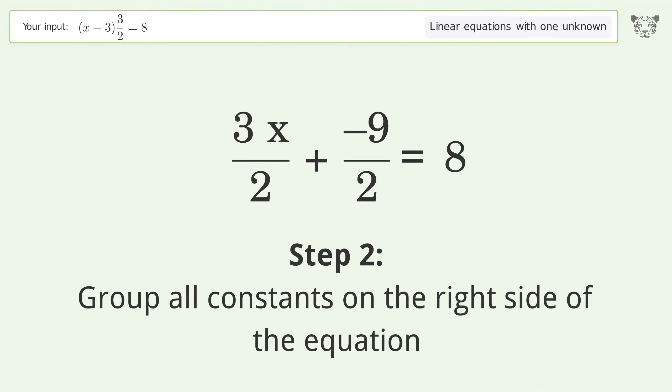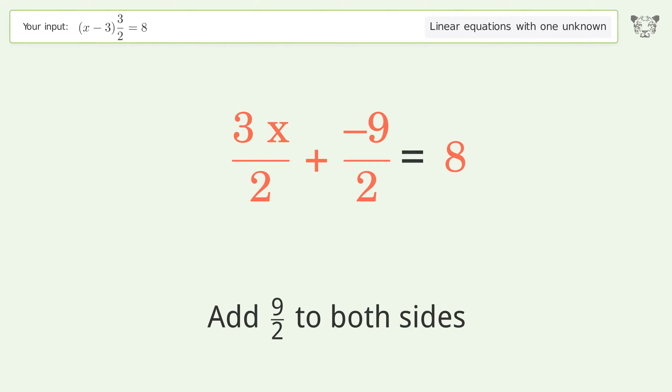Group all constants on the right side of the equation. Add 9 over 2 to both sides.